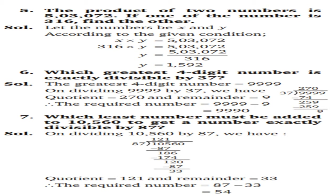5th question: the product of two numbers is 5,30,072. If one of the numbers is 316, find the other. Let the numbers be x and y. According to the given condition, x × y = 5,30,072. So 316 × y = 5,30,072. Finding y: divide 5,30,072 by 316. The value of y is 1,05,092.